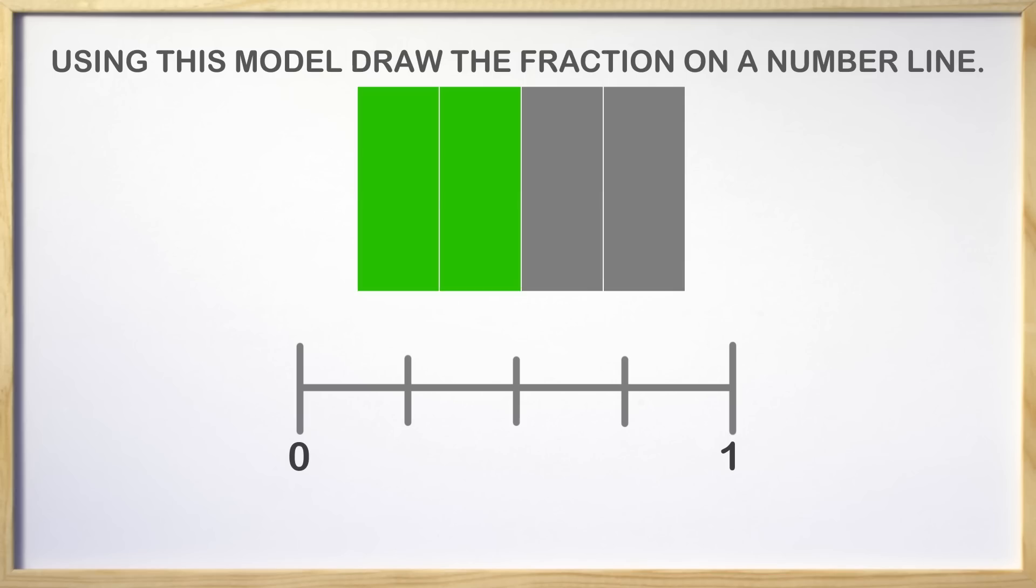Looking at the rectangle, two parts are colored green, so that is our numerator. We start counting, one, two. We now have reached the two on the number line. The fraction is two-fourths. We have shown where two-fourths is on a number line. Great job!